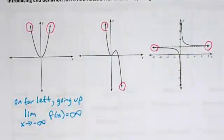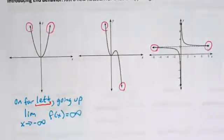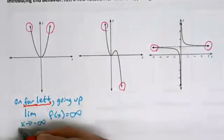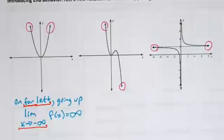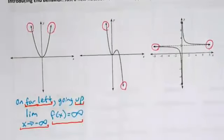Some of you have seen the 'x arrow negative infinity' notation and some haven't. This notation means exactly what the words say: the far left means x is heading toward negative infinity, and 'going up' means f of x is heading toward positive infinity. It's just notation — it looks a little weird at first but you'll get used to it.